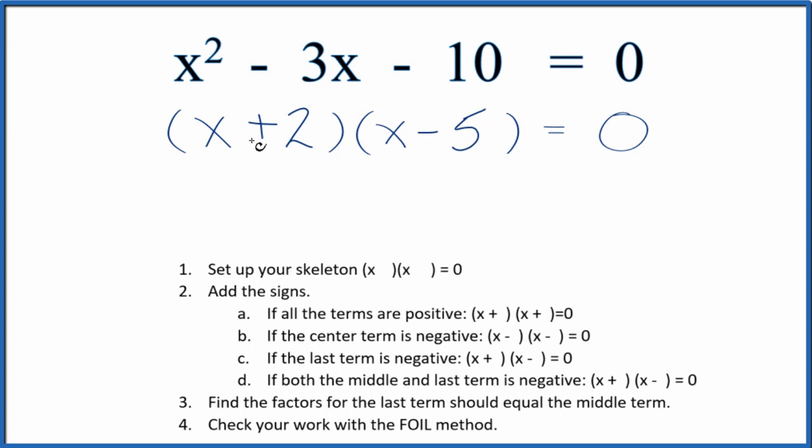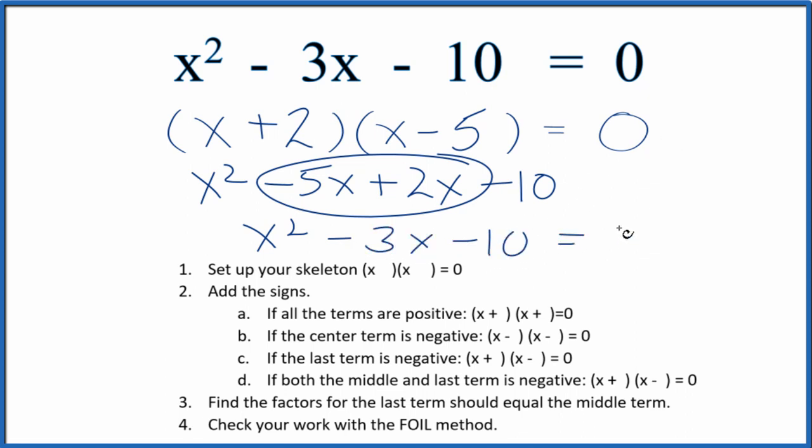Let's work this out using the FOIL method. First terms: x times x gives us x squared. Outside: x times negative 5. Inside: 2 times x gives us plus 2x. Last terms: 2 times negative 5 gives us negative 10. If we combine these, we get x squared minus 3x minus 10 equals zero, which is the same as we have up here. So we factored the equation correctly.